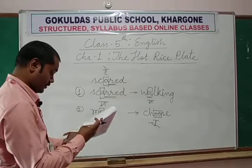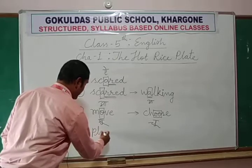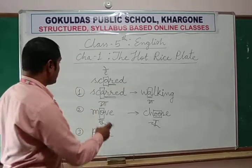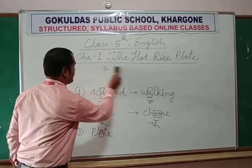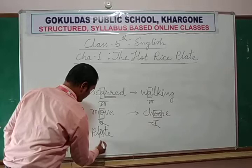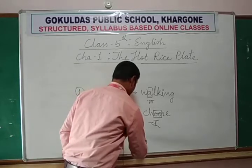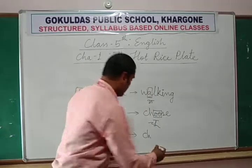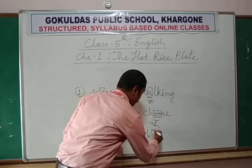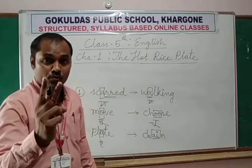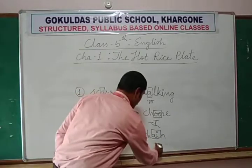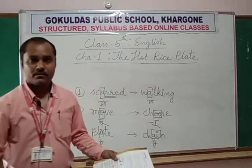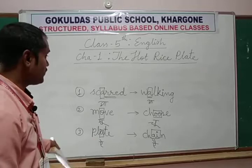Third pair: 'plate' — P-L-A-T-E. Here A is highlighted. The A produces the same sound as in 'scared.' We need to find a similar word — 'chain' — C-H-A-I-N. This combination of two letters produces the same sound. Chain — you might have seen an iron chain. So 'plate' and 'chain' form the third pair.